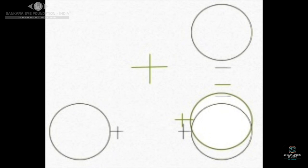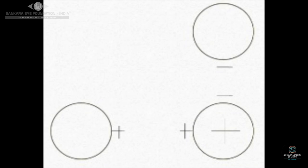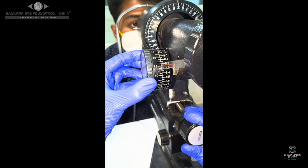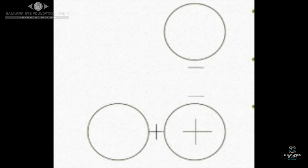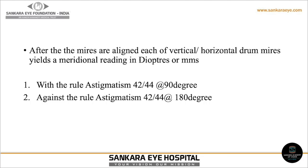During focusing, the most crucial step is to focus the mires and adjust the instrument so that the plus sign is centered on the lower right-hand circle. After centration of the plus sign, adjust the horizontal power wheel until the horizontal mires are in the locked-up position. Once the horizontal mires are locked, adjust the vertical drum until the vertical mires are also locked, achieving superimposition of plus-plus and minus-minus signs, making all three mires aligned. Each of the vertical and horizontal drum mires yields a meridional reading in diopters. With-the-rule astigmatism means the vertical meridian dioptric power is more than the horizontal at 90 degrees; against-the-rule astigmatism is when the horizontal dioptric power is more than the vertical at 180 degrees.